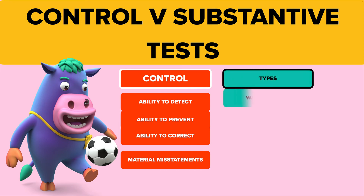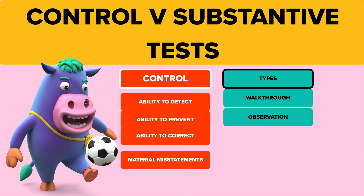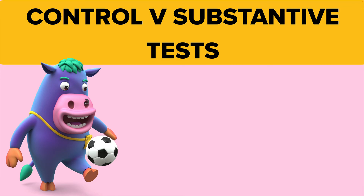Other types of control tests would be walk-through tests, where you literally follow a sales order all the way through the system until the cash is received, making sure every control is working as you go along. Observation is also a control test — you can observe that the controls are being followed. And computer-assisted auditing techniques, which is basically software that does all the tests for you within the system and can test controls automatically.